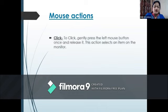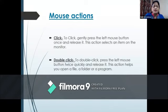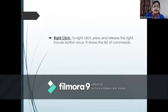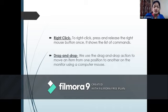Mouse actions. First, click: to click, gently press the left mouse button once and release it. This action selects an item on the monitor. Double click: to double click, press the left mouse button twice quickly and release it. This action helps you open a file, a folder or a program. Right click: to right click, press and release the right mouse button once. It shows the list of commands. Drag and drop: we use the drag and drop action to move an item from one position to another on the monitor using a computer mouse.